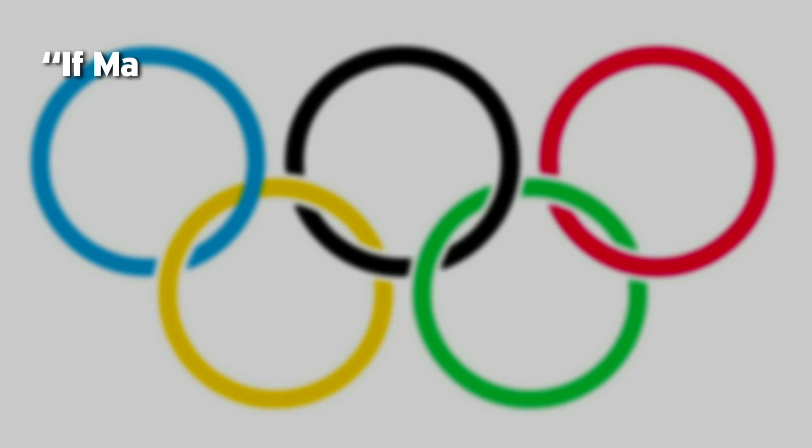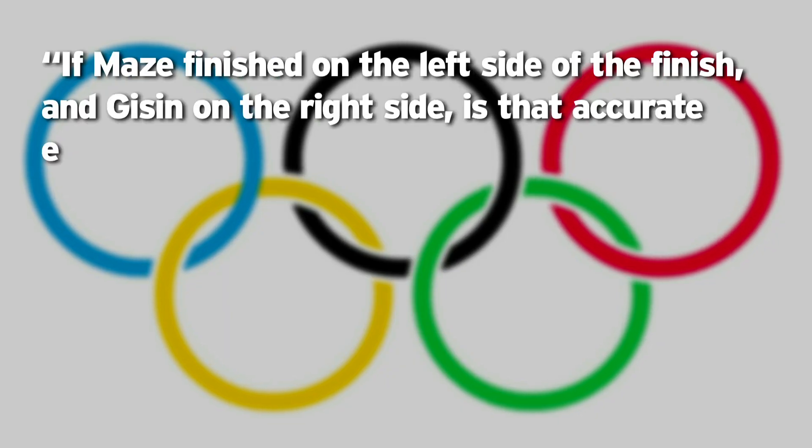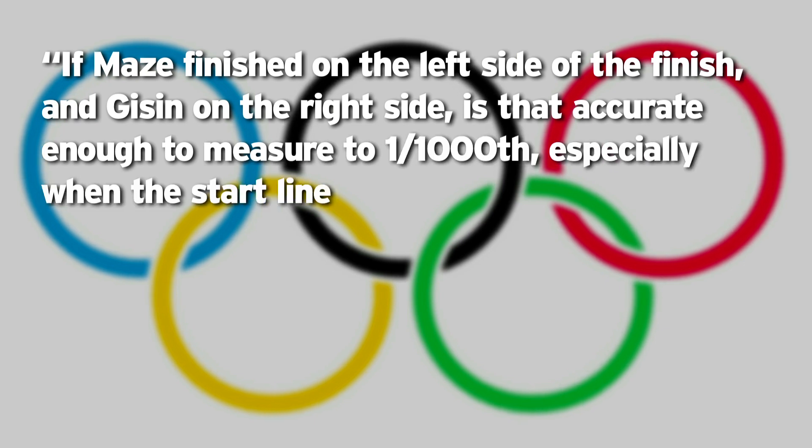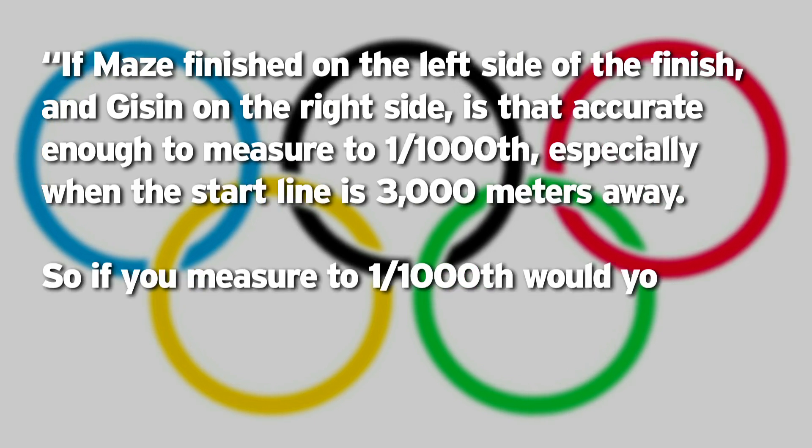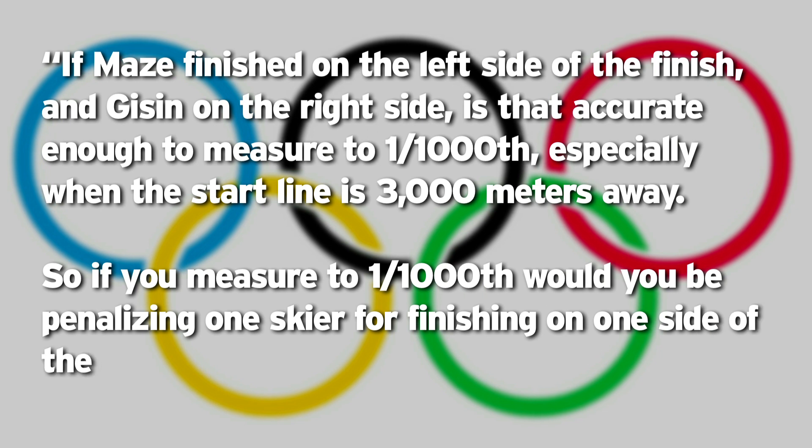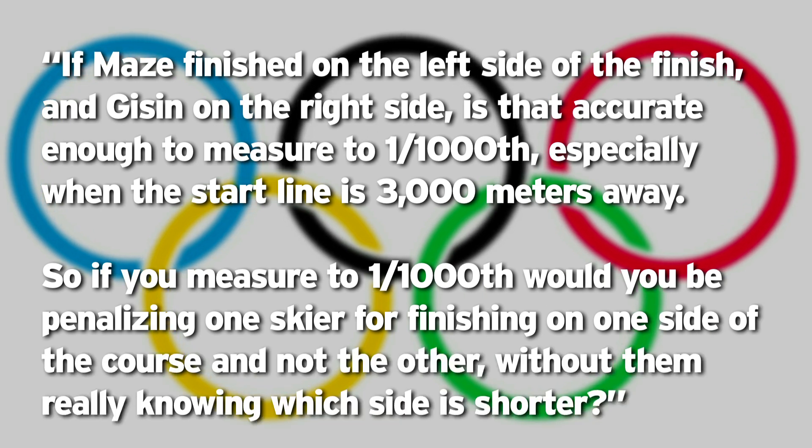So if the finish line isn't perfectly straight, it'd be hard to decide the true winner. Olympic historian Bill Mallon explains, 'If Mays finished on the left side of the finish and Gieson on the right side, is that accurate enough to measure to 1/1000th, especially when the start line is 3,000 meters away? So if you measure to 1/1000th, would you be penalizing one skier for finishing on one side of the course and not the other without them really knowing which side is shorter?'